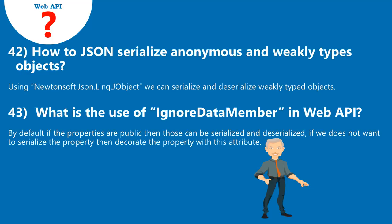Question 43: What is the use of IgnoreDataMember in Web API? By default, if the properties are public then those can be serialized and deserialized. If we do not want to serialize a property, then decorate the property with this attribute.